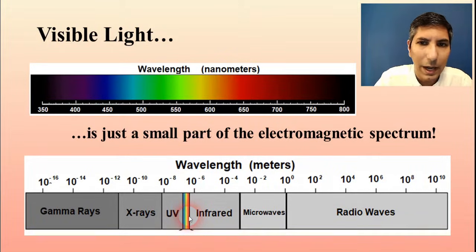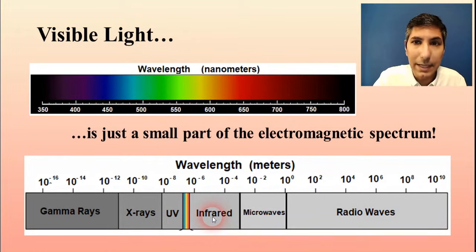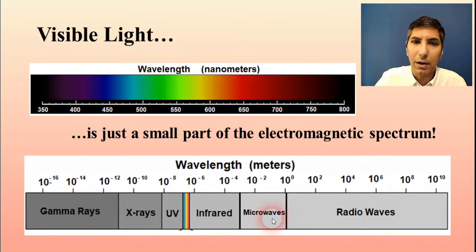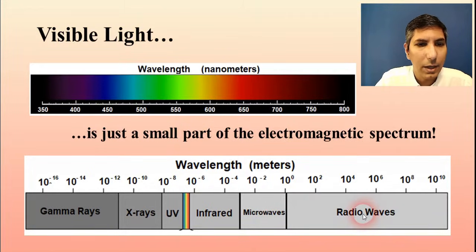And so if you go beyond, if your eyes could somehow see beyond red, or at wavelengths that are longer than red, you'd be seeing infrared. Now, most of us can't see that with our eyes. That is something that our human eyes cannot see. If you were to go even longer waves, you'd have microwaves. You've probably heard of microwave ovens. Well, microwave ovens use these microwaves in order to cook food. Keep on going, you have radio waves and TV waves.